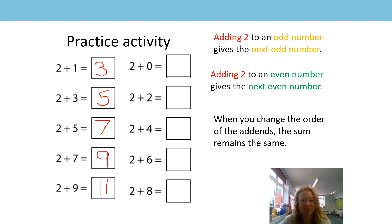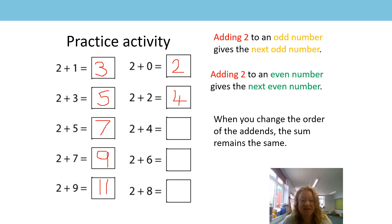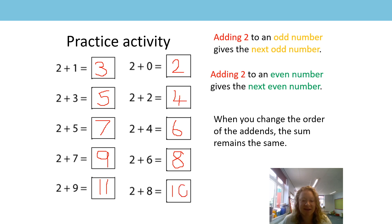Zero plus two is going to give me two. Well done. And then two add two — it's going to take me to my next even number: four. Then we start on four and our next even number, because we're adding two, will be six. Then we start on six and add two — our next even number is eight.